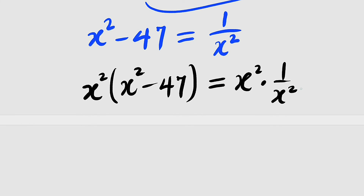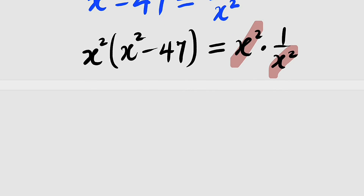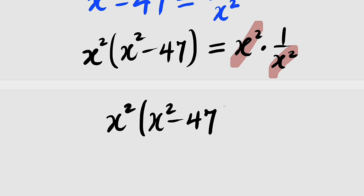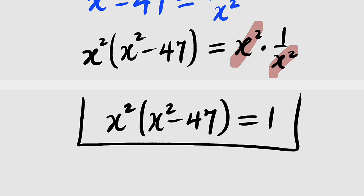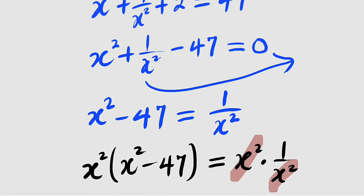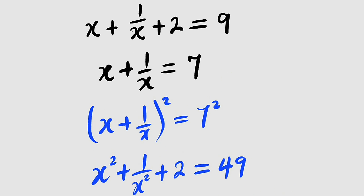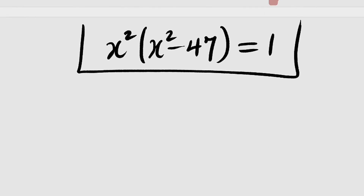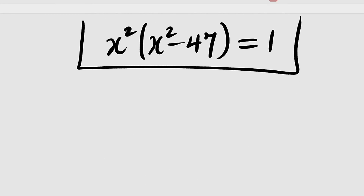Now finally, we are going to multiply both the left hand side and right hand side by x squared. By doing that, we have x squared multiplied by x squared minus 47 on the left hand side. On the right hand side, x squared multiplied by 1 divided by x squared — x squared cancels x squared, leaving only 1. Therefore, x squared multiplied by x squared minus 47 is equal to 1. Final answer — this is exactly what we are looking for.